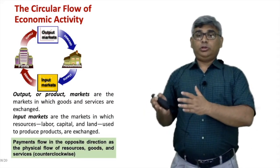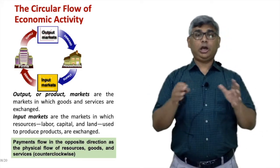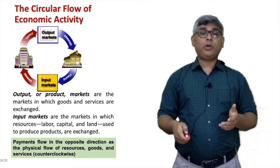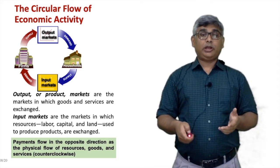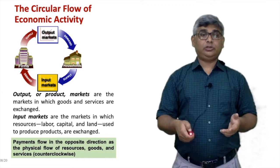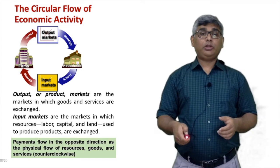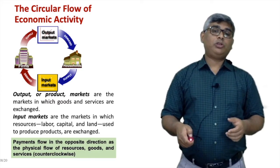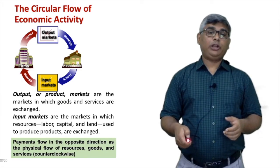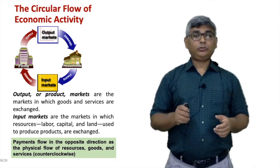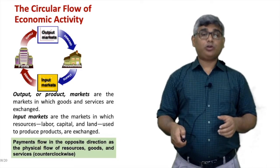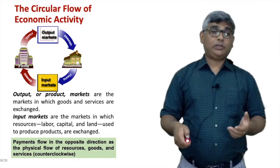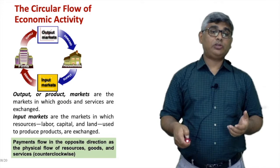Now, understanding the law of demand and the law of supply, let's look at what we call the circular flow of the economy. We have two conditions: the output market and the input market. Output markets are where goods and services are exchanged. Firms supply products to these output markets, and from these output markets, households consume the products or services based on demand.